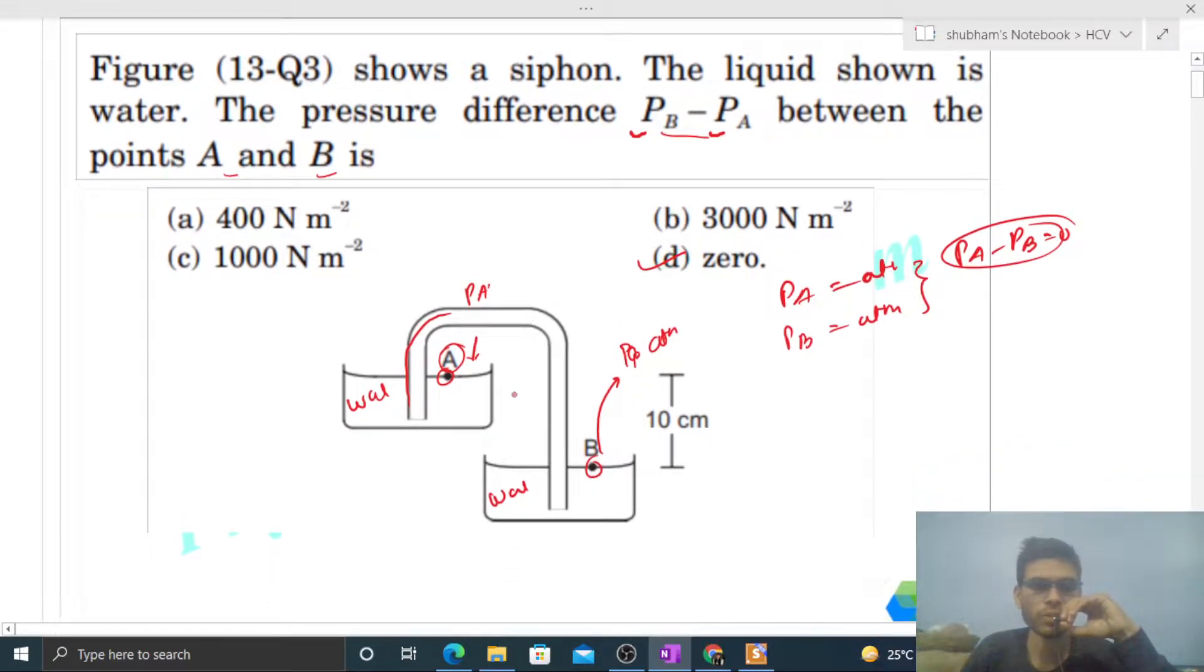From here water is not flowing at all, okay? No water is flowing. You've just connected the siphon and placed it here, and the pressure at the surface will be atmospheric pressure.